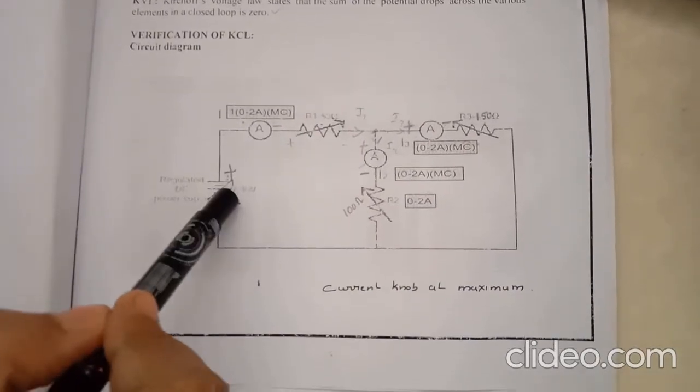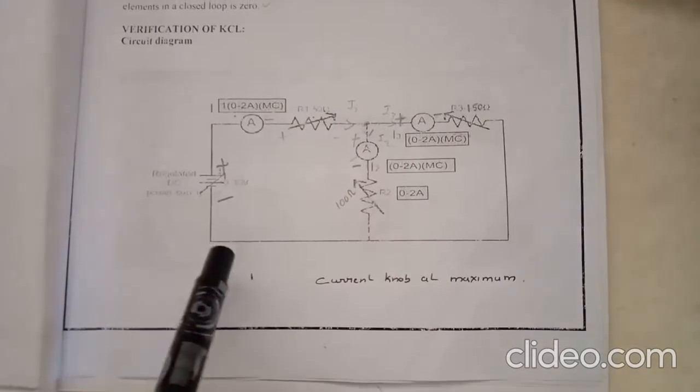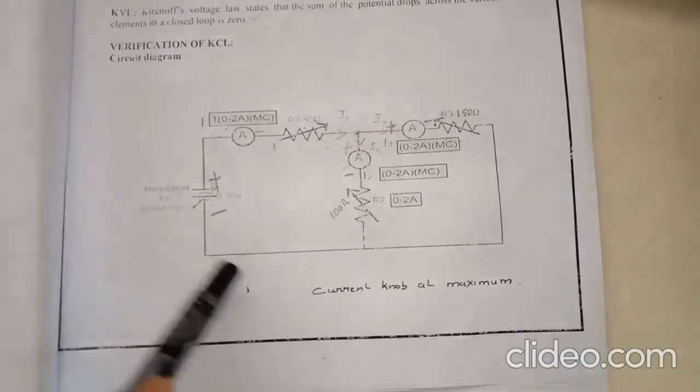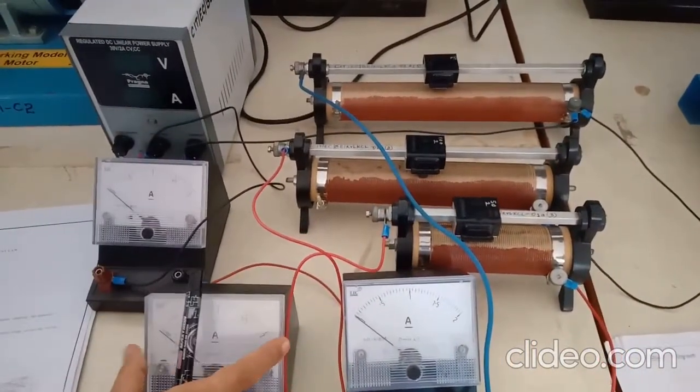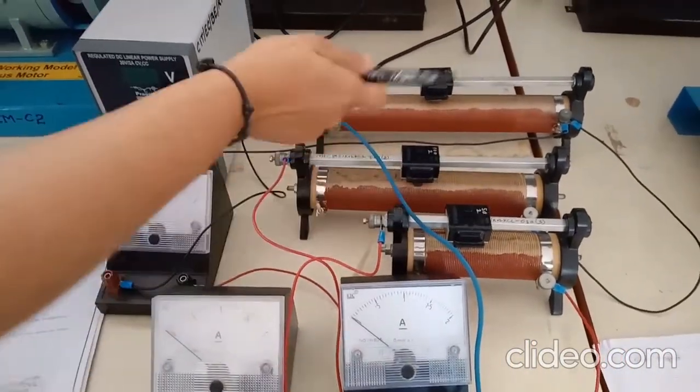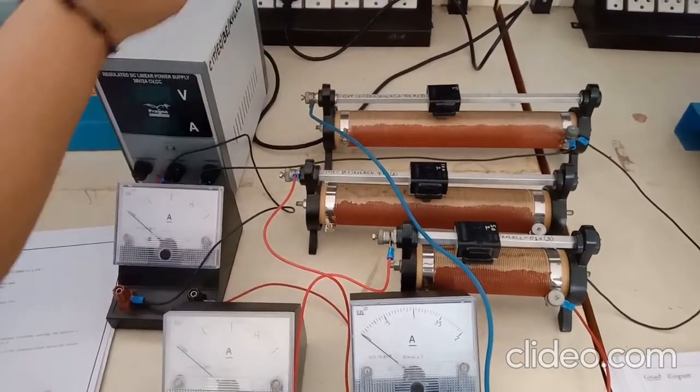Previously in KVL it was connected in parallel, but here it is connected in series. According to this circuit, the connection is made here. This is ammeter 1, ammeter 2, 3, rheostat 1, rheostat 2, and rheostat 3. The connection is made as shown in the diagram.